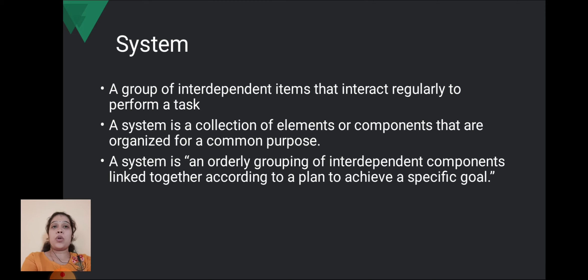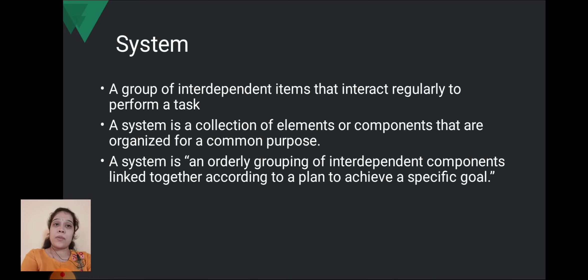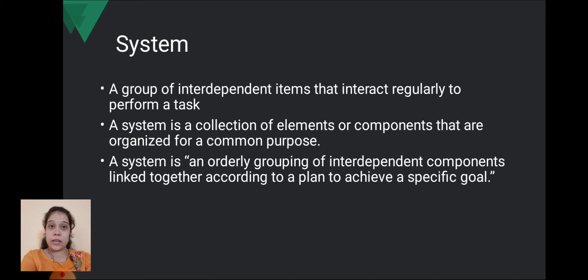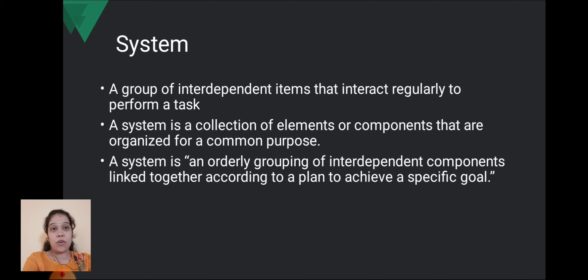So what is a system? A system is a group of interdependent items that interact regularly to perform a task. Interdependent means a collection of elements or components that are organized for a common purpose. A system is a collection of different components that are organized for a common purpose.